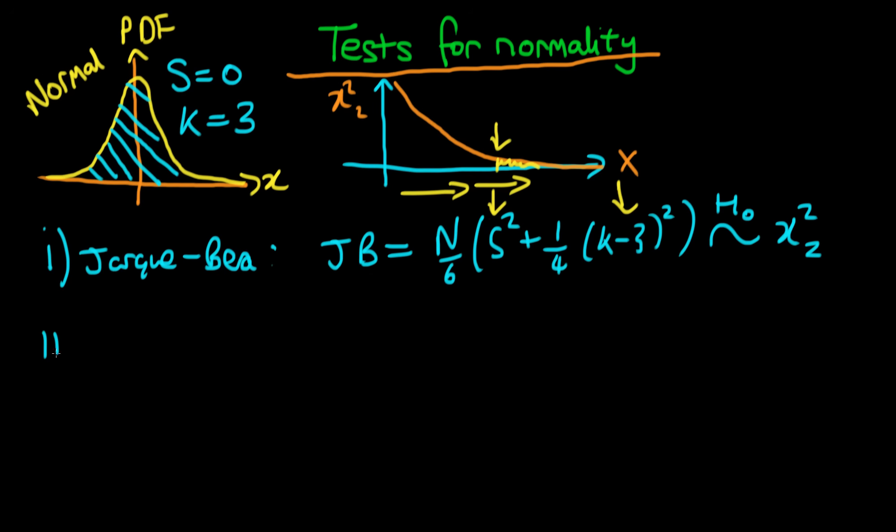The second test is called the Shapiro-Wilk test. It's a slightly different test to the Jacquet-Berra test in the way it works. I'm not going to write down the explicit form of the statistic, but the idea is that you compare the normal percentiles or normal quantiles with the actual sample percentiles.